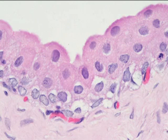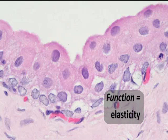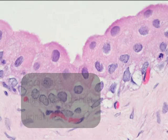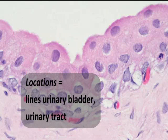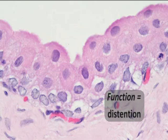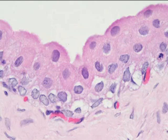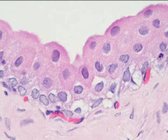The cell shape is very transitional in form because of the function of this tissue. It's a very elastic tissue, lining the urinary bladder and portions of the urinary tract where it can distend, which means it can stretch out. As the bladder fills up with urine, it can accommodate large volumes of fluid, and then after urination,